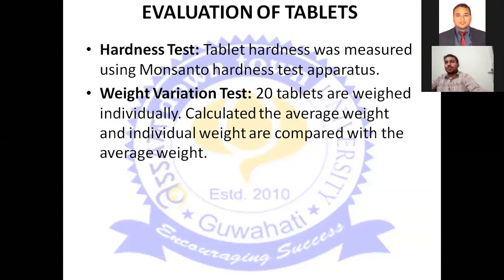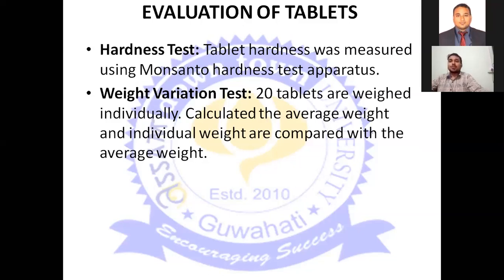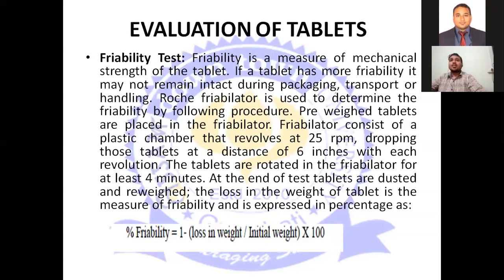Next is the weight variation test. To calculate the weight variation test, we randomly take 20 tablets and weigh each tablet individually. After that, we calculate the average weight of the tablet. If all tablets fall within plus or minus 10% of the average weight, then we can accept the tablets; otherwise, if any tablet differs from the plus or minus 10% range, we reject that particular tablet.